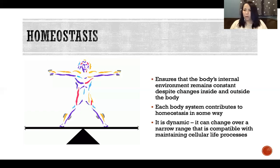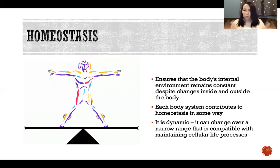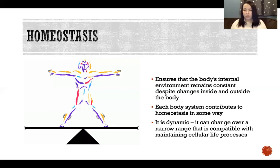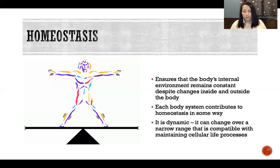Homeostasis is dynamic — the state of the body is never completely static. Blood glucose level, for example, is always fluctuating up and down within a range. All of these different functions that we're constantly regulating, we regulate to keep within a very narrow range — like blood pH and blood glucose. When we get outside of those ranges, that's when we start to have disease, dysfunction, and even potentially death.